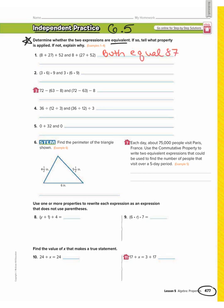Now let's see what property was used. First we have (8 + 27) + 52, then we have 8 + (27 + 52). Let's see if the order of the numbers changed: we have 8, 27, 52 in both expressions. Because the order of the numbers didn't change, it's not the commutative property. The only thing that changed is the parentheses shifted from 8 and 27 to 27 and 52. When the order of the numbers stays the same but the parentheses move, that's the associative property.